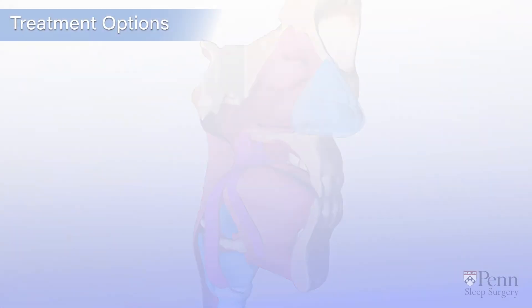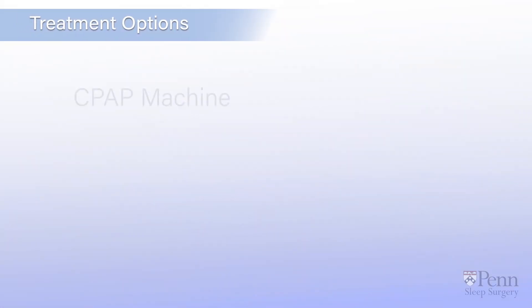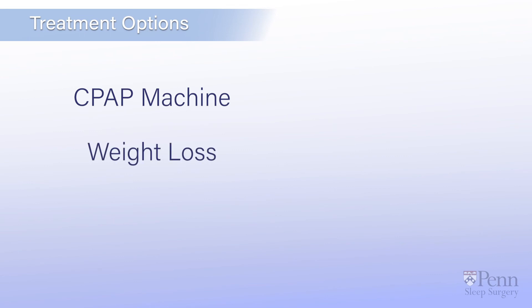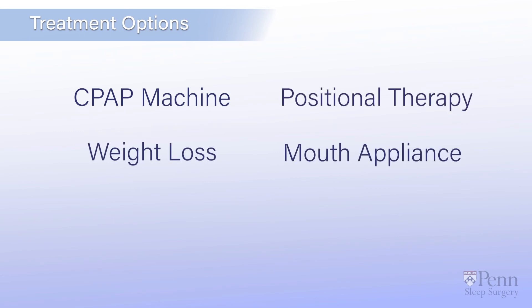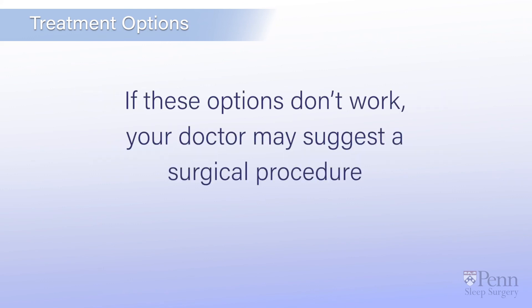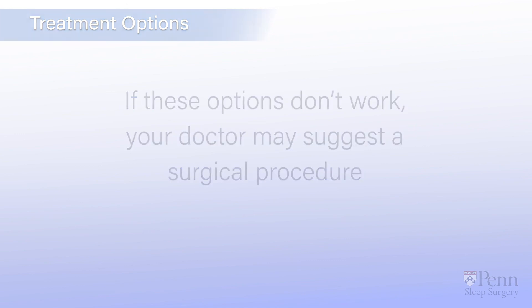The first line of treatment includes a CPAP machine, weight loss, or positional therapy. A mouth appliance may be the first or second line of treatment. If these options don't work, your doctor may suggest a surgical procedure to treat the problem in that specific site of obstruction.